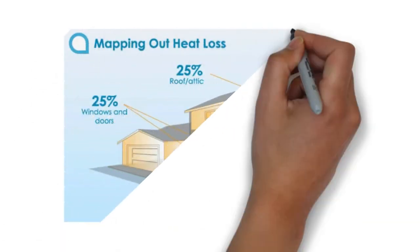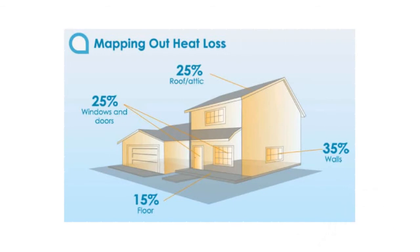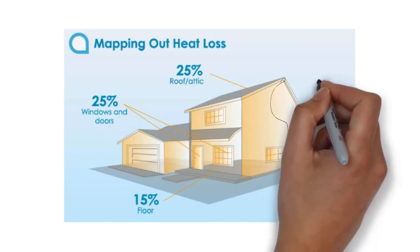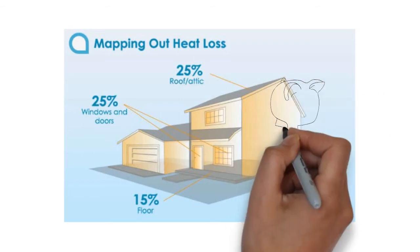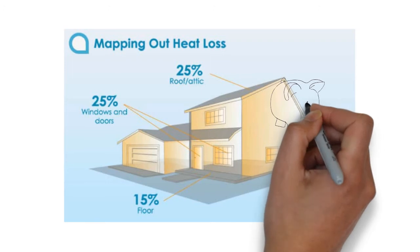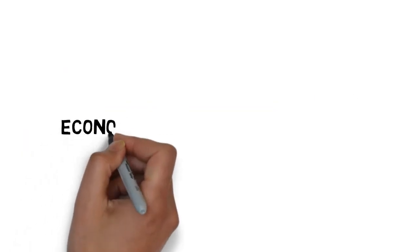So let's map out the heat losses in an ordinary home. Heat can escape from a house if the windows, doors, and walls are not properly sealed and insulated. This can increase the utility bill by a tremendous amount and is not economical or efficient for the environment.